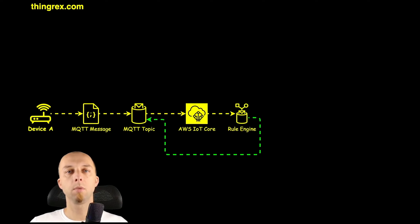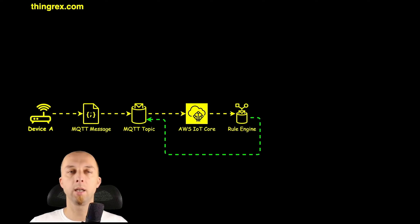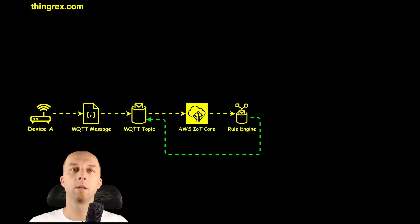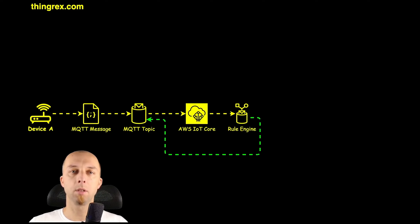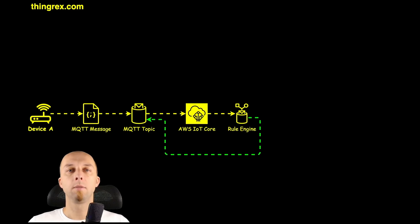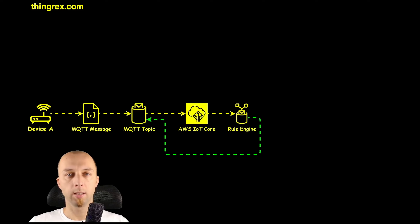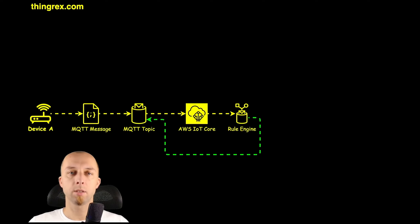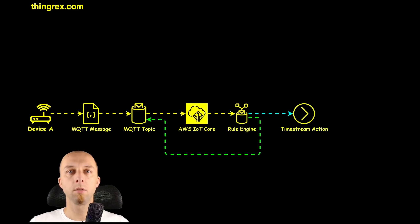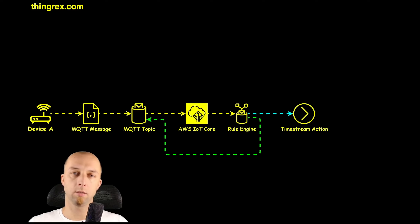Rule Engine is one of the features provided by AWS IoT Core. A rule monitors a specified MQTT topic and verifies if the topic and the message that arrived to that topic match defined criteria. If that's true, it invokes an action.